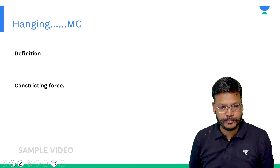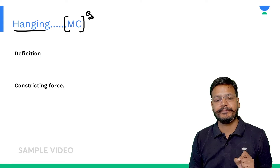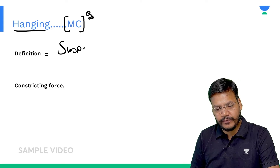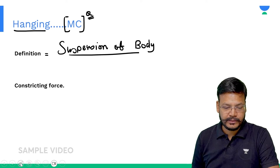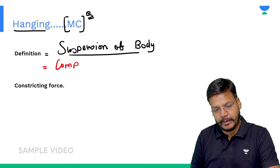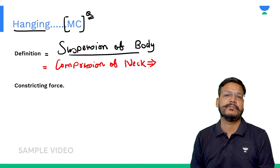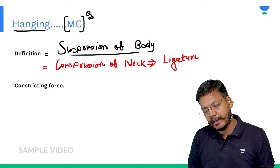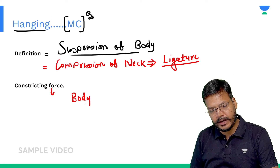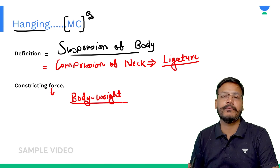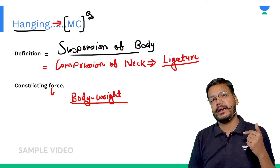Tardieu spots are caused by acute rise in venous pressure. Now coming to the first method — hanging. Hanging is the most common type of asphyxial death. The definition of hanging is: suspension of the body with compression of the neck. The ligature encircles the neck and the constricting force is the body weight. This is hanging.